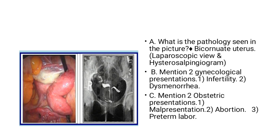So here comes the answer. What is the pathology seen? This is a bicornuate uterus. As you can see specifically in this picture, this is a bicornuate uterus. In terms of the study, this is a hysterosalpingogram, and you can also appreciate the bicornuate uterus on it.